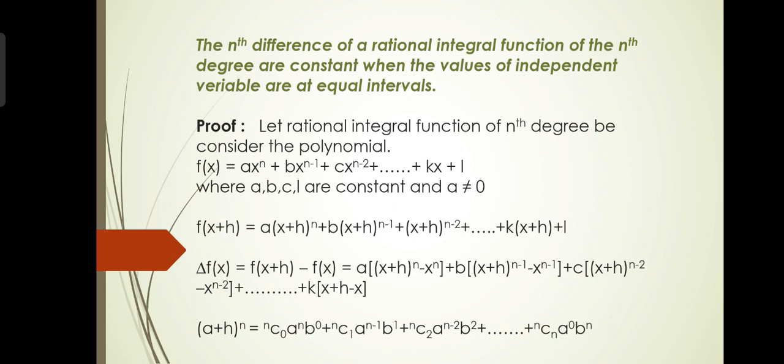Now define Δf(x): we subtract f(x+h) minus f(x). Putting in the values and taking a common, the remaining part is [(x+h)^n - x^n], plus b times [(x+h)^(n-1) - x^(n-1)], plus c times [(x+h)^(n-2) - x^(n-2)], plus ... plus k[(x+h) - x].